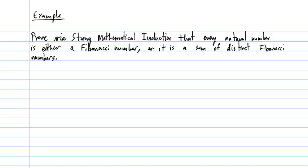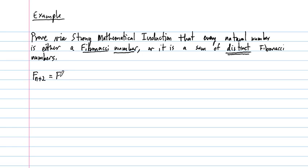In this video, we'd like to prove this statement using strong mathematical induction: that every natural number is either a Fibonacci number itself, or it is a sum of distinct Fibonacci numbers. The Fibonacci numbers are the numbers in the Fibonacci sequence, which is defined recursively by F(n+2) = F(n+1) + F(n), and this is true for all n ≥ 0.